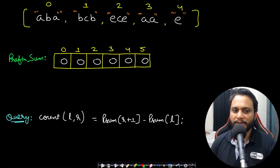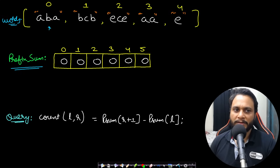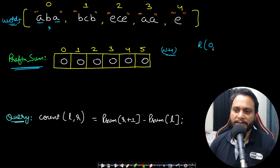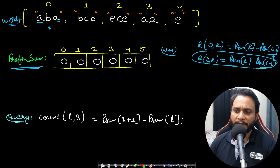We precompute a prefix sum array. Given our words array with five strings, we create a prefix sum array of size n+1, initialized entirely to 0. The reason for n+1 size is so that range queries of the form prefix[r] minus prefix[l-1] work uniformly even when l is 0, avoiding any index-out-of-bounds issues.